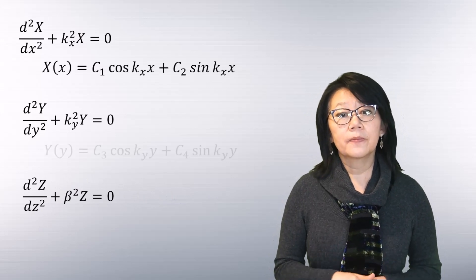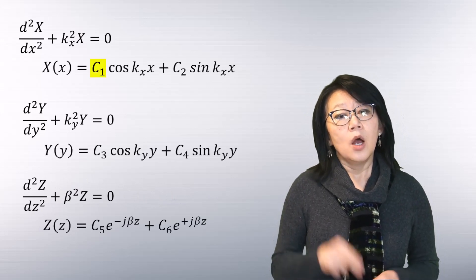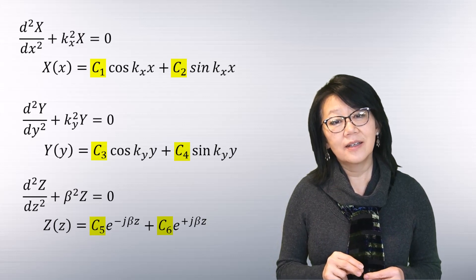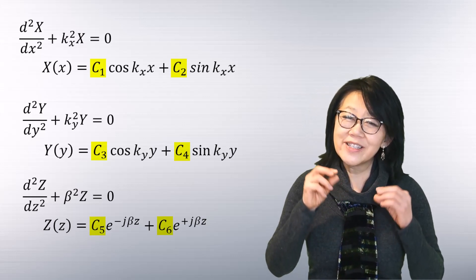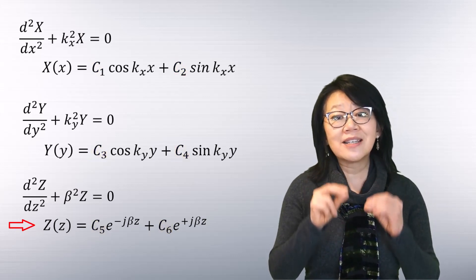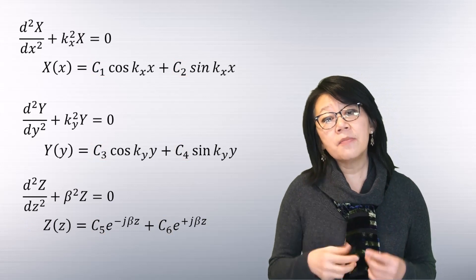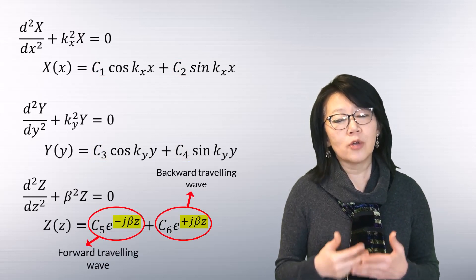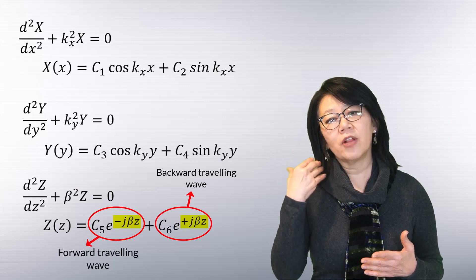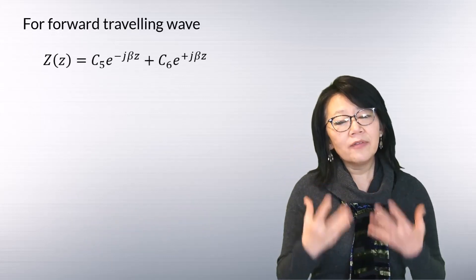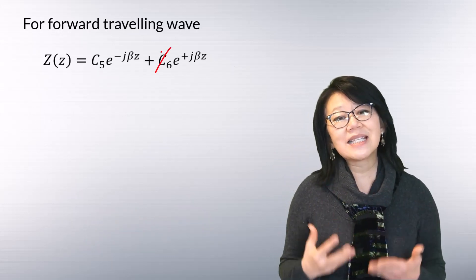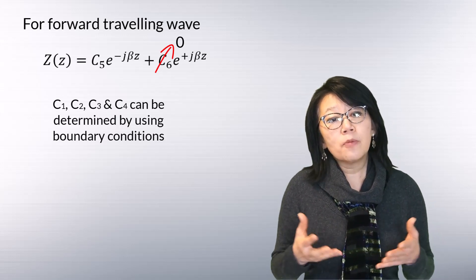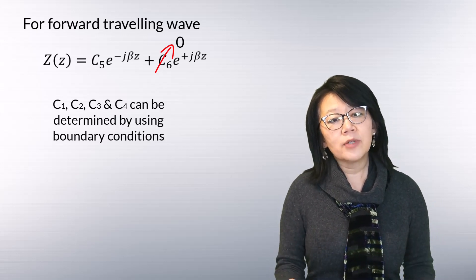The general solution for these differential equations is given by constants c1 through c6, which are the integration constants. Notice that the solution for the z direction is given by the sum of both the forward and backward traveling waves. For a forward traveling wave, c6 is zero, and the other constants c1 to c4 can be determined by applying boundary conditions.